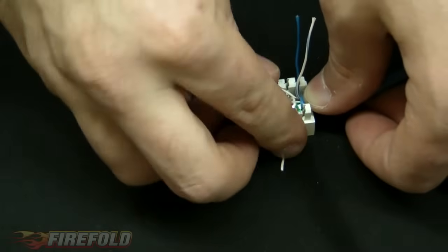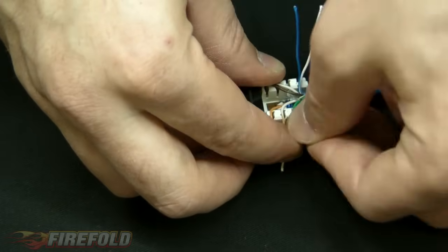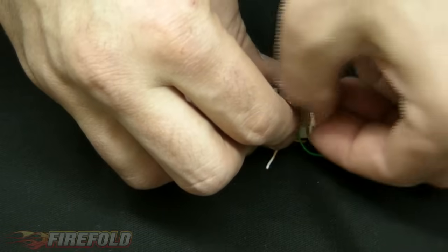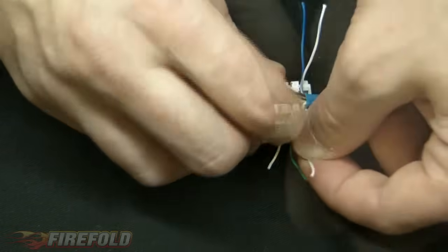We're going to go ahead and place the solid orange in. And orange and white stripes. And the solid green. And then the green with white stripes.